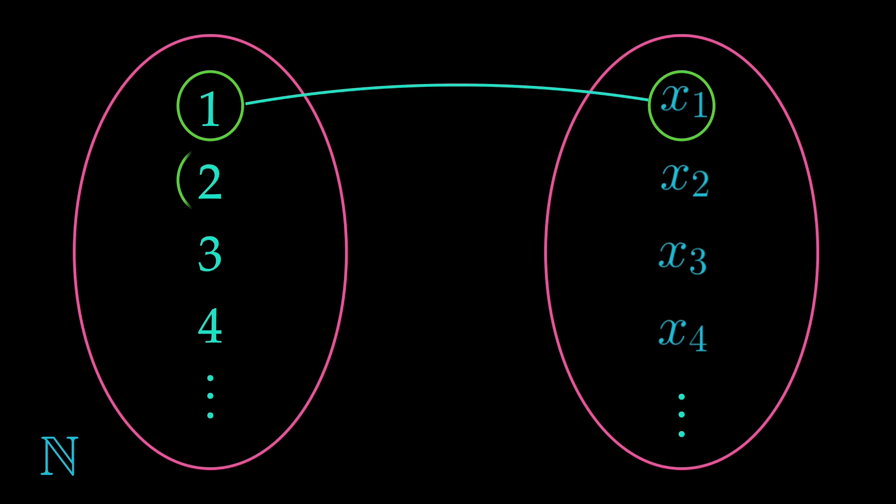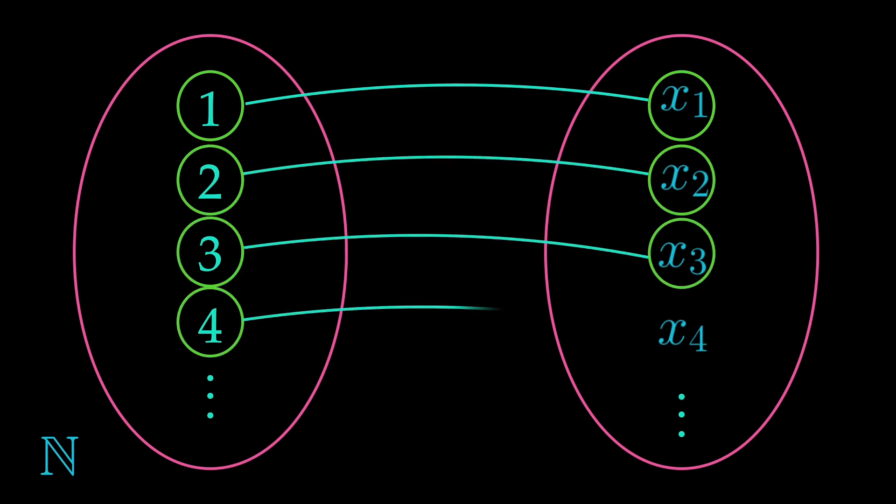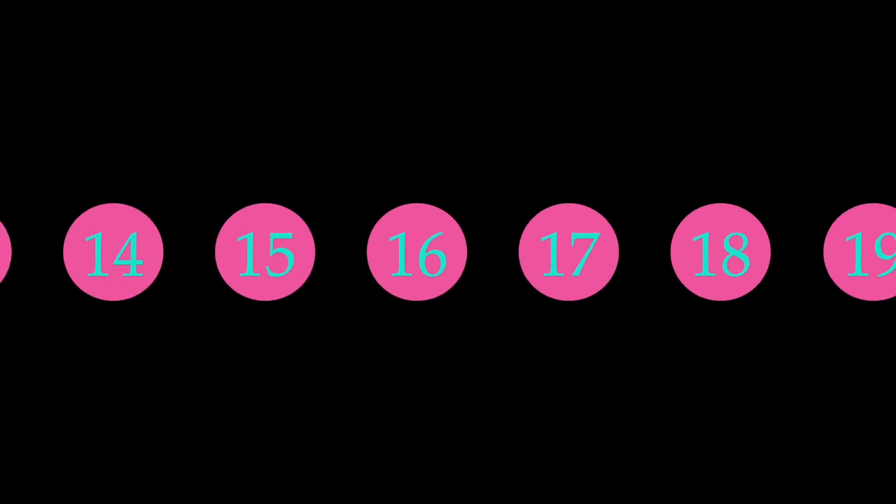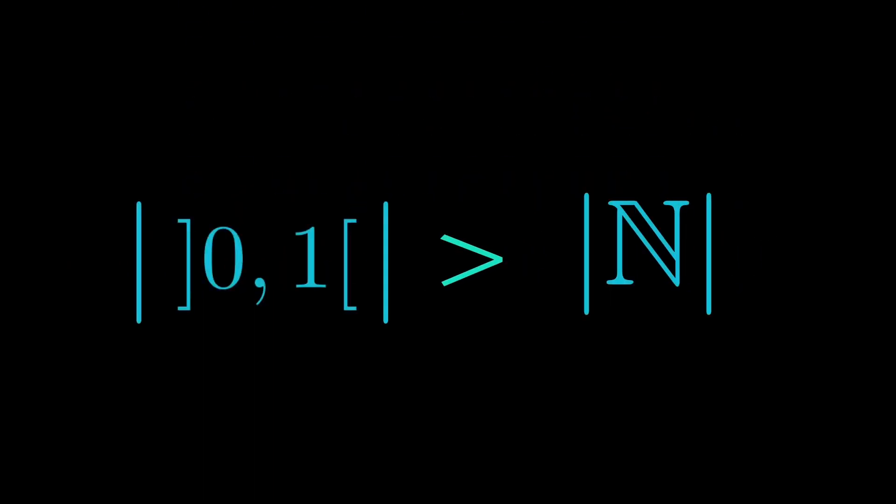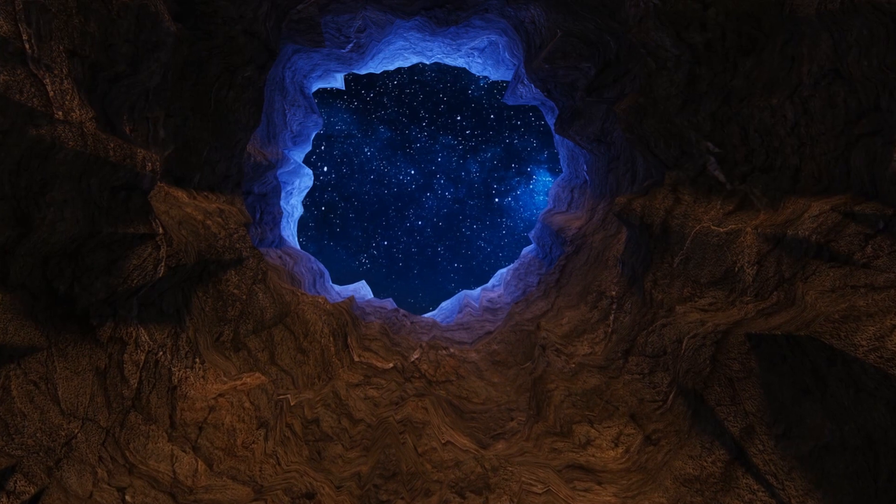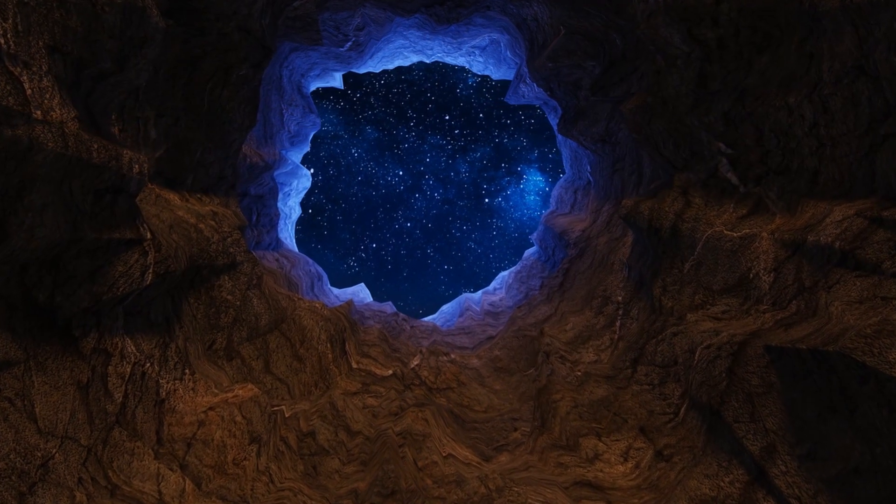Although we already paired up every natural number with a real number between 0 and 1, we still found another real number between 0 and 1 that doesn't have a natural number as a partner. Although there are already infinitely many natural numbers, we can find even more real numbers in the interval between 0 and 1. Therefore, we can write the following equation. There are more transcendental and irrational numbers to be found between 0 and 1 than in the whole set of rational numbers.